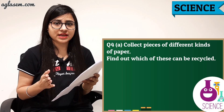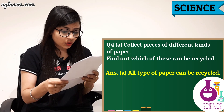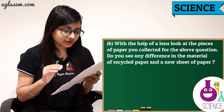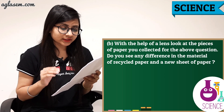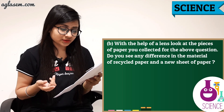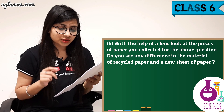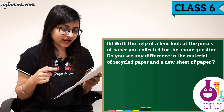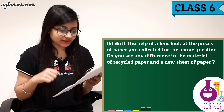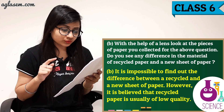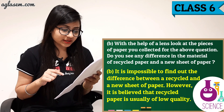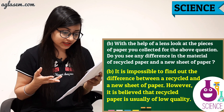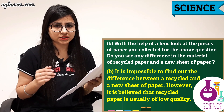Question number 4a: Collect pieces of different kinds of paper. Find out which of these can be recycled. The answer is: all types of paper can be recycled. Question 4b: With the help of a lens, look at the pieces of paper — do you see any difference between recycled paper and a new sheet of paper? The answer is: it is possible to find out the difference. However, it is believed that recycled paper is usually of lower quality.